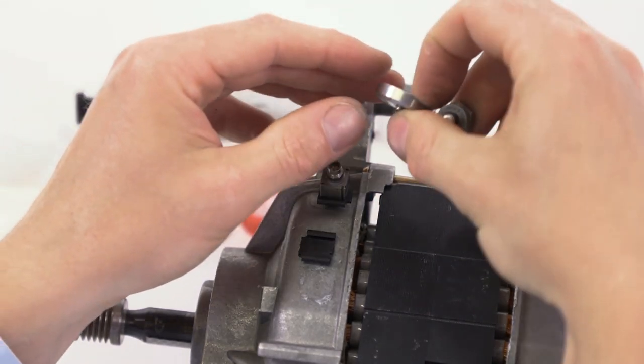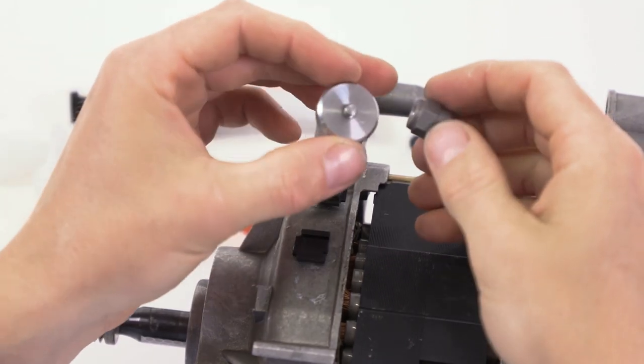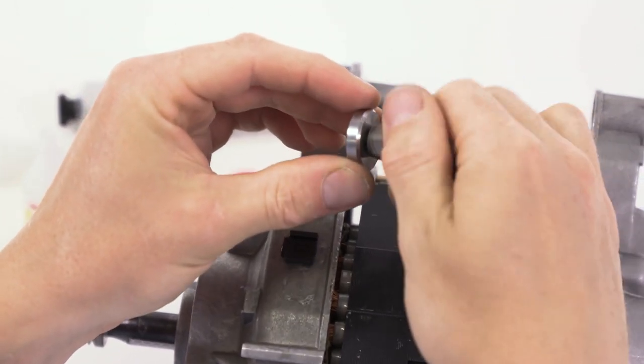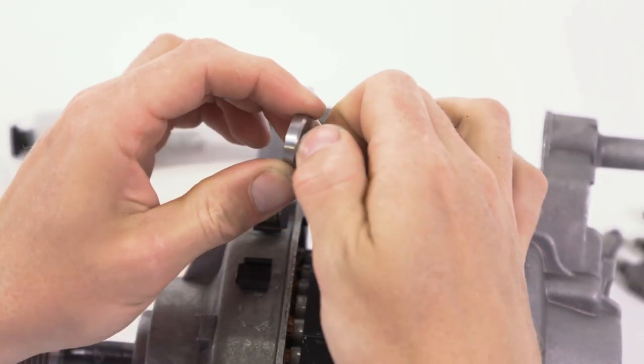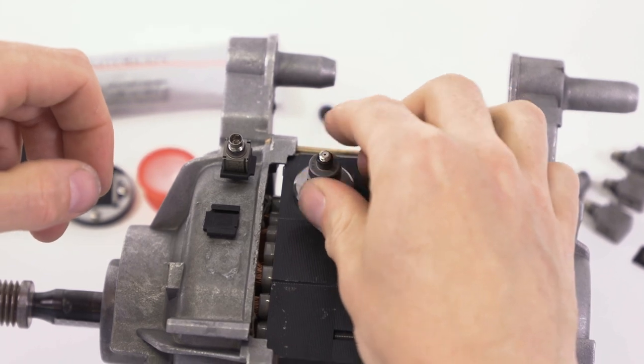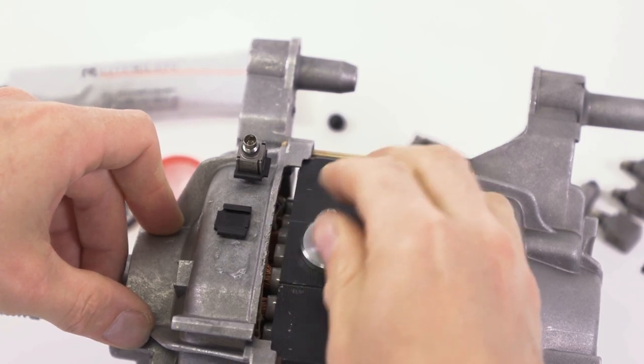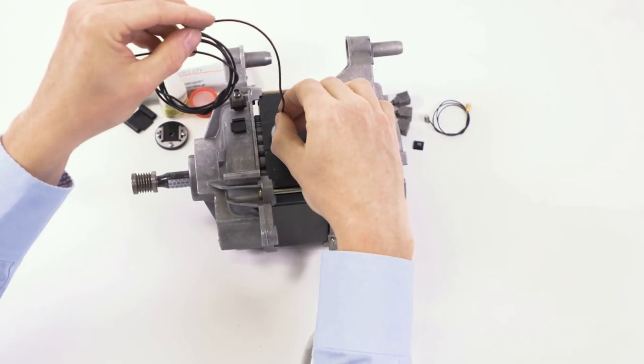For stud mounted accelerometers, for example 4534 here, we can attach that to a magnet. So here with a magnetic structure we can use that to mount and easily remount the accelerometer.